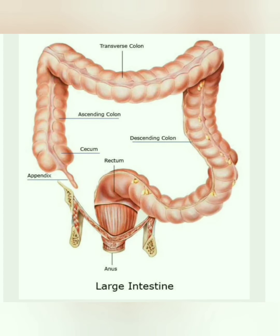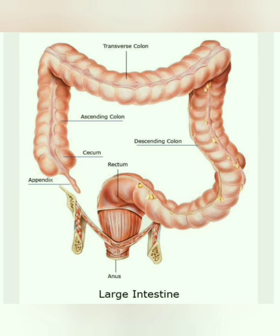The large intestine is about 1.5 meters long. The undigested food stays in the large intestine for up to 12 hours before it is passed out from the body. The waste products and fibers which are not digestible are passed to the end of the digestive tract. The walls of the large intestine produce a slimy mucus that helps food waste slide along easily.